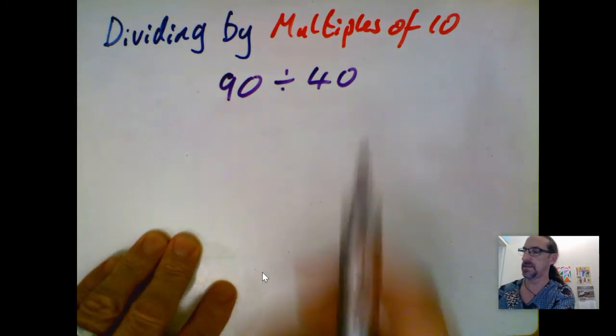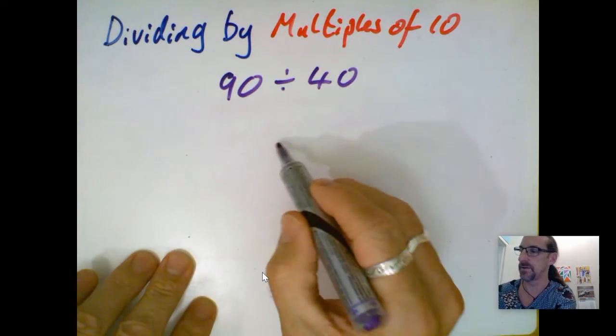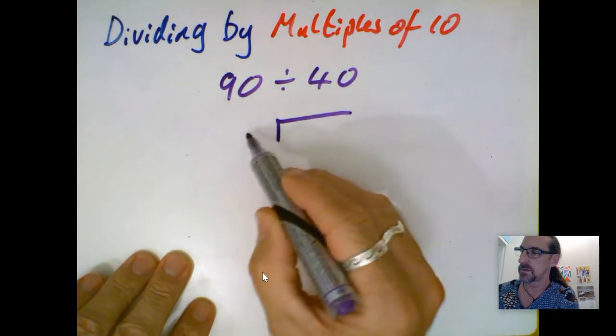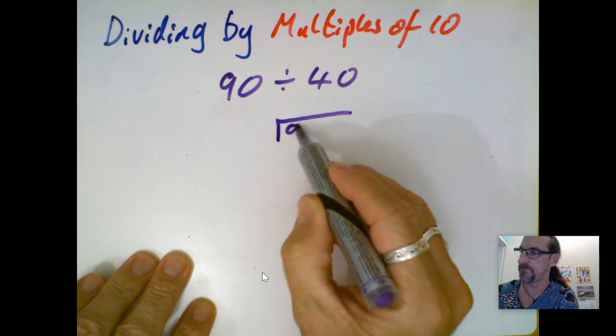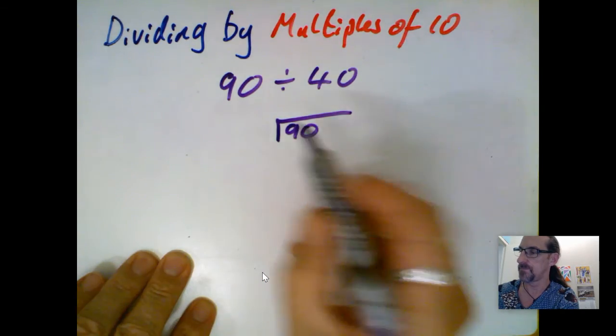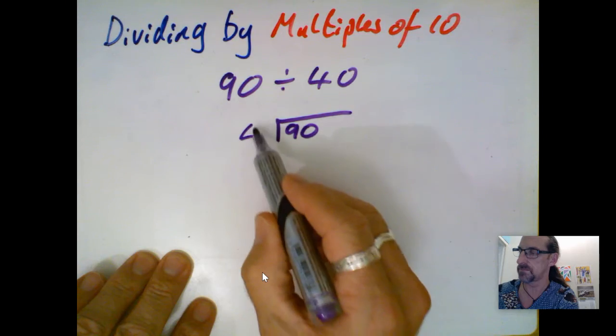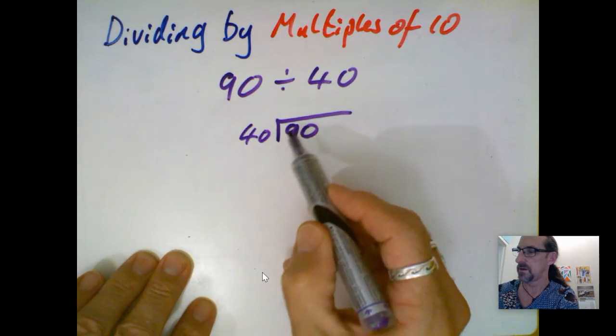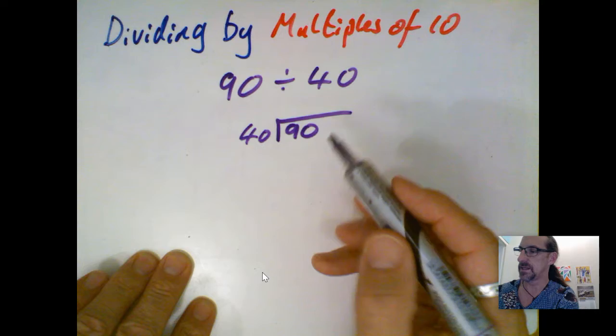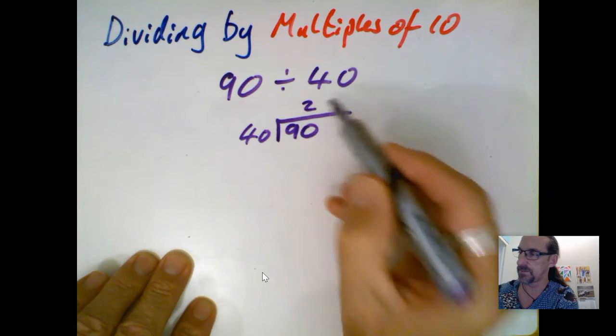So with that in mind, let's set this out with an algorithm. I've got 90 is my whole number, my divisor is 40, it goes outside here, and I'm thinking two lots of 40 is 80. So I can put my two up here, and now I've got two lots of 40, which is 80.